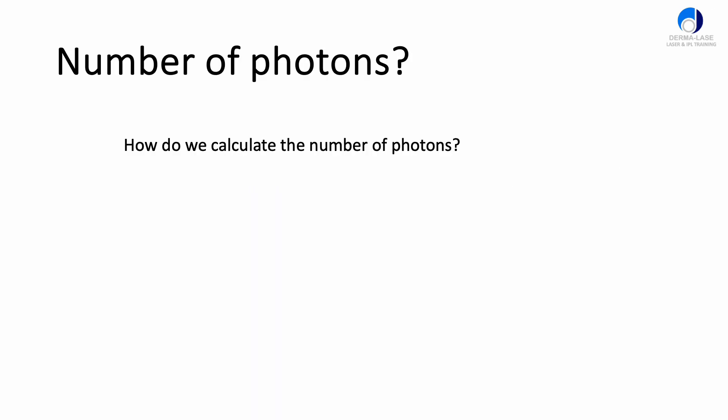So how many photons are there in each pulse of light? This will become clearer after I do these calculations and explain why we want to know this. How do we calculate the number of photons in a pulse of energy? We can use the Planck equation which is the energy of each individual photon equals h, which is Planck's constant, times the frequency of that light.